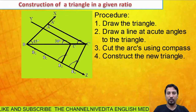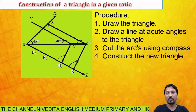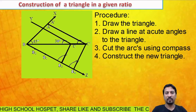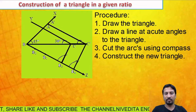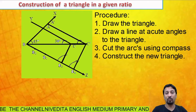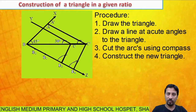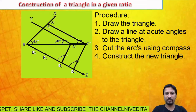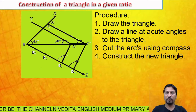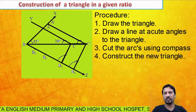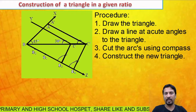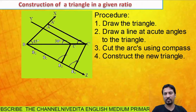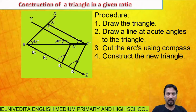This is the second part of construction where you will be learning how to draw or construct a triangle in a given ratio. As you can see in the slide, we have taken a triangle — there are actually two triangles. Before going to the problem, let me explain the procedure. First, we need to draw the triangle; in the problem we will be given the dimensions — either the lengths of the sides or the angles of the triangle, which you already know how to construct from your previous classes.